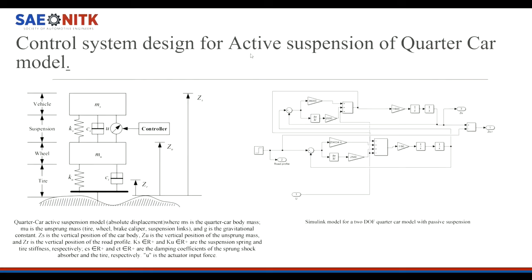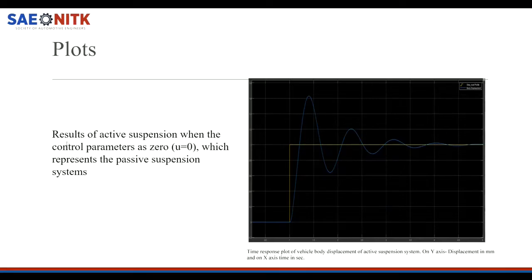Our objective is to design a control system to convert the passive quarter car model to an active suspension system. We are adding a controller that can minimize the travel of the sprung mass, where U is the control input added between the unsprung and sprung mass. The Simulink model on the left represents the mathematical model of the active suspension for the quarter car model. If we set parameter U to zero, the active suspension will act as a passive suspension system.